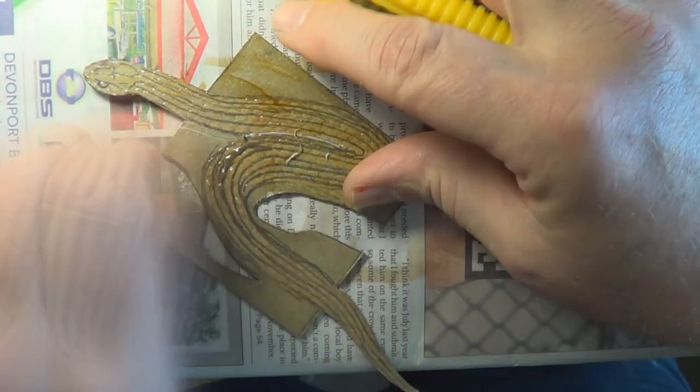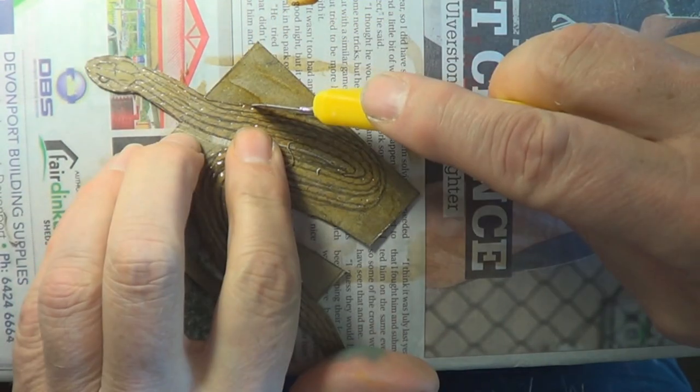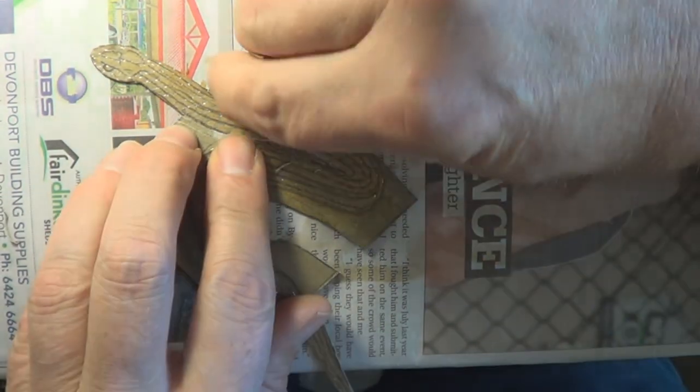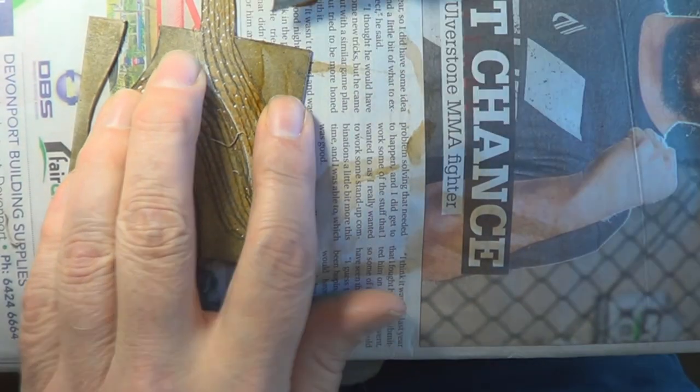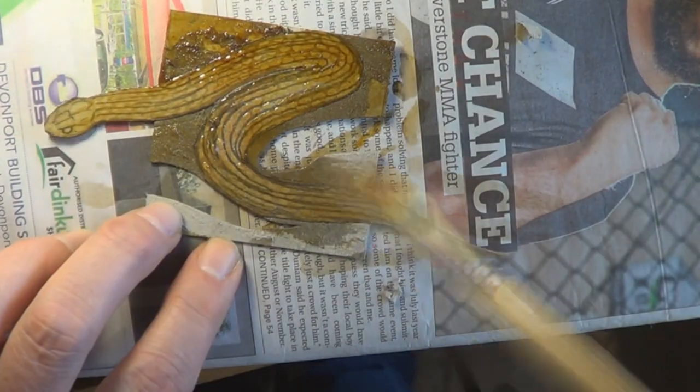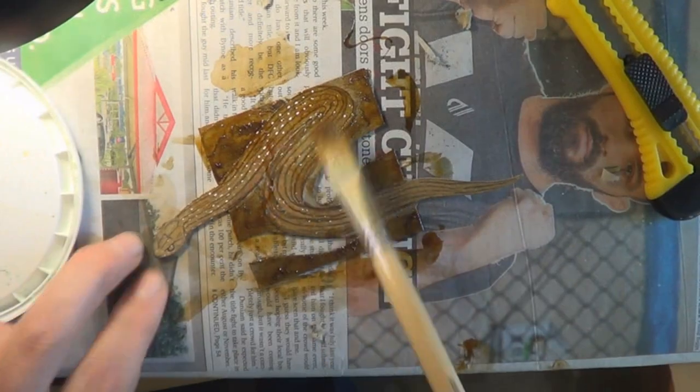Now I'm doing what I call cut and peel. So I'm cutting around the snake and I'm just peeling away the cardboard. It gives a little bit of extra texture. And I give it another coat of shellac.